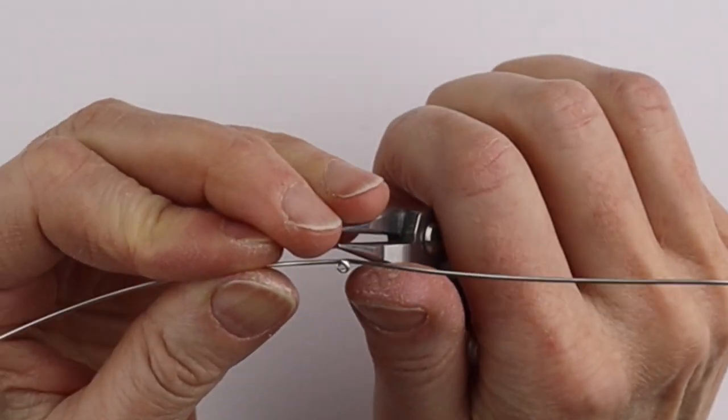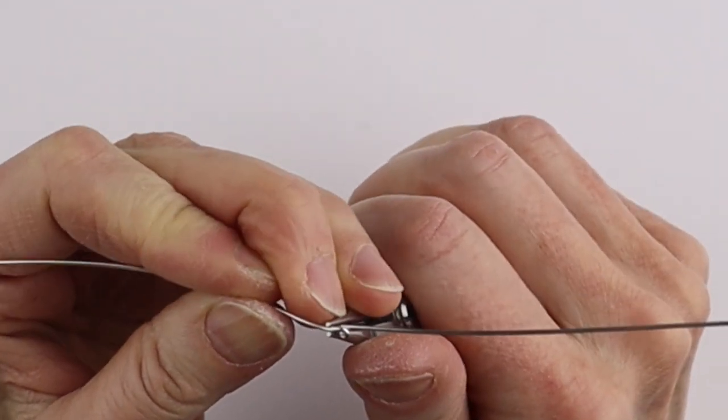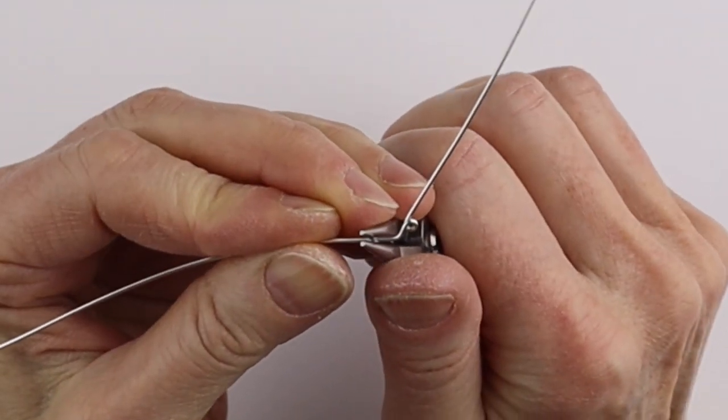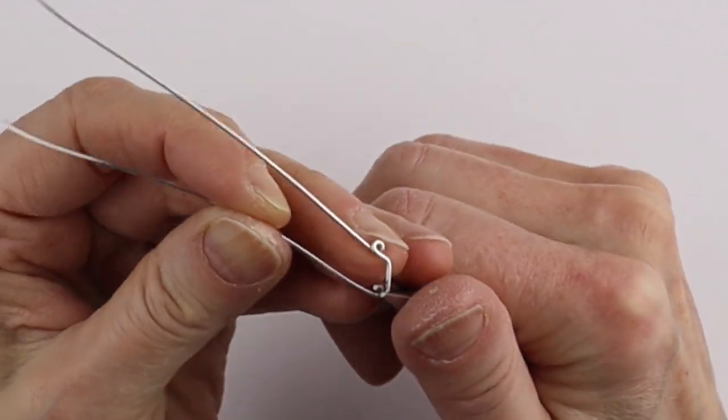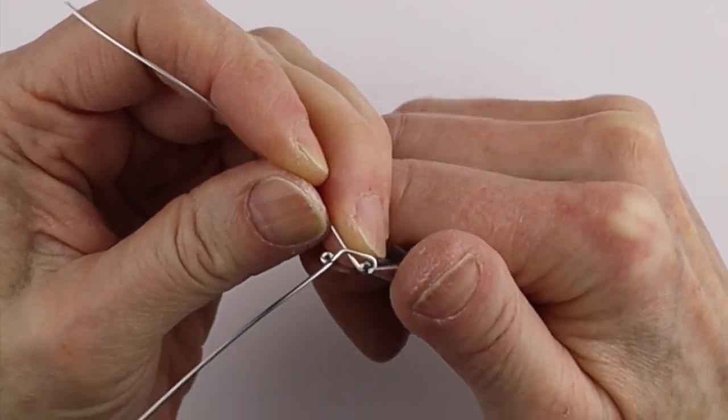Straighten the wire as you need and then put the round nose pliers again. Bend it up for the ears. Twist it around to form the first ear.